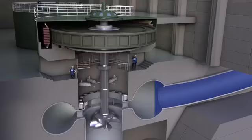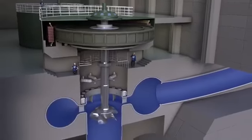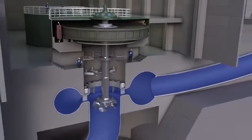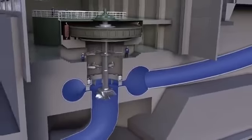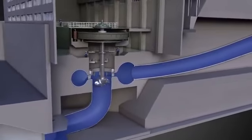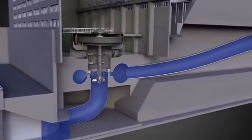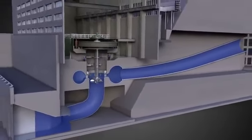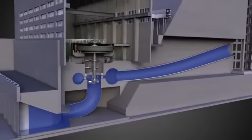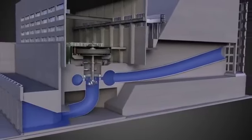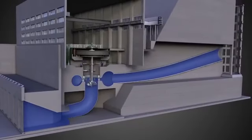When the turbine spins, it turns a metal shaft which goes up to an electrical generator. As the shaft turns, it causes the generator to rotate, producing electricity.